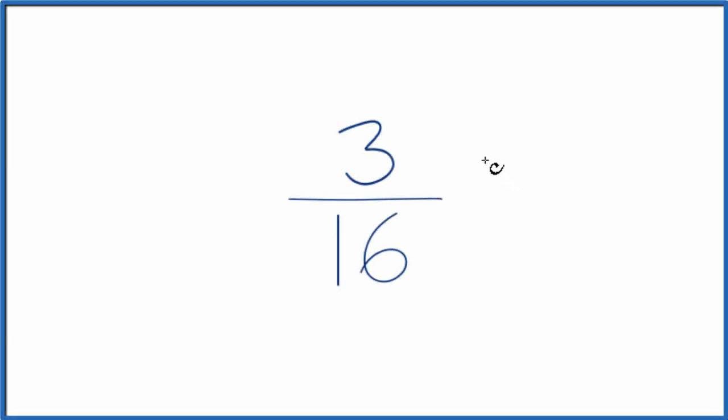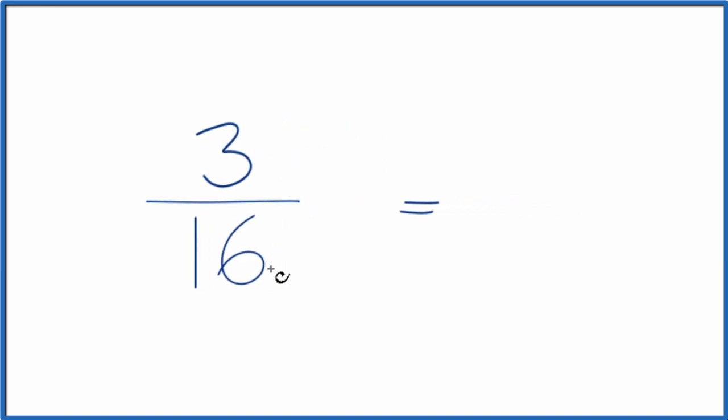Here's how you write three equivalent fractions for 3 sixteenths. What we want to do is find other fractions that are equivalent. They have the same value as 3 over 16, or 3 divided by 16. You'll get the same decimal answer, just that they have a different numerator and denominator.